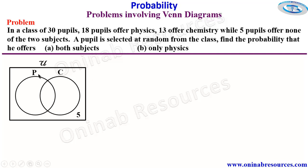We can then look for the number of pupils offering physics and chemistry. That is going to be N of P union C. That's going to give us 30 minus 5, which gives 25.